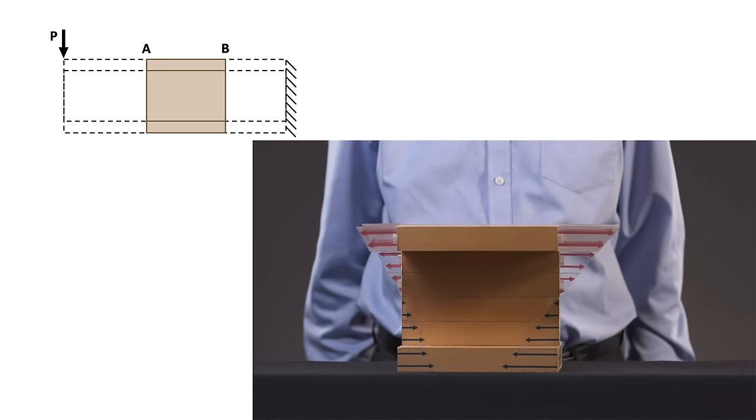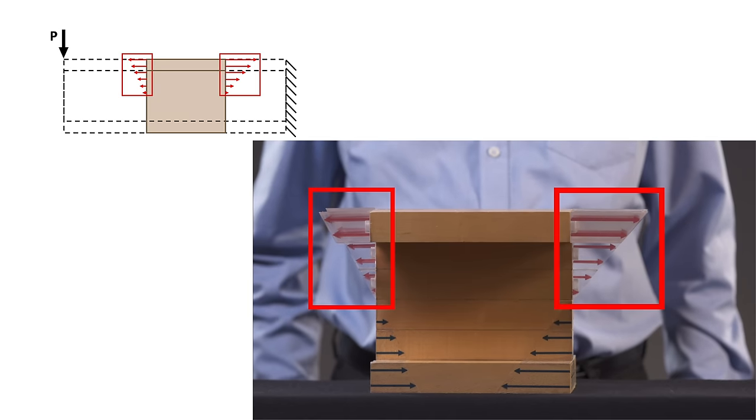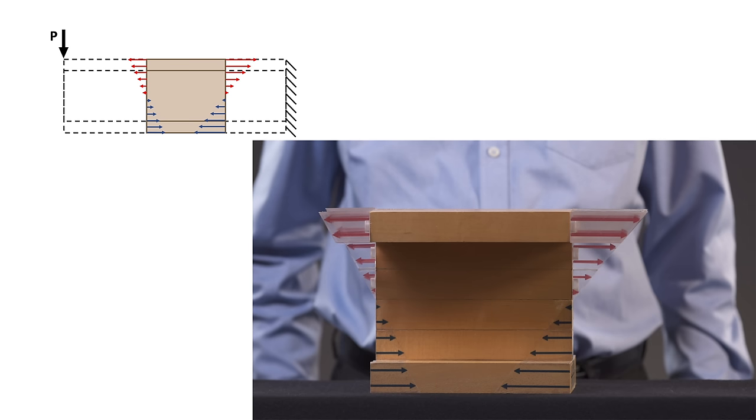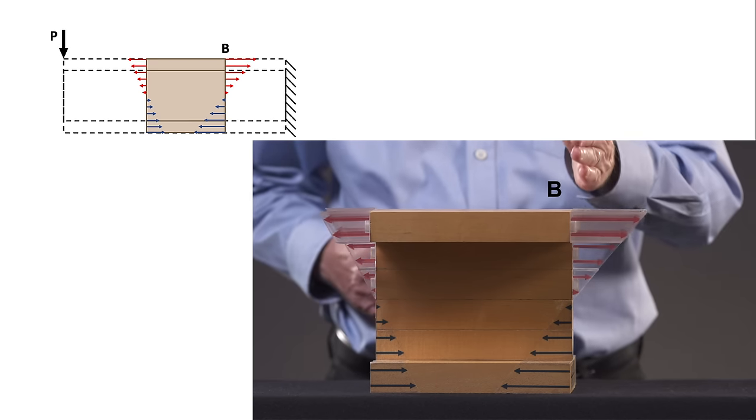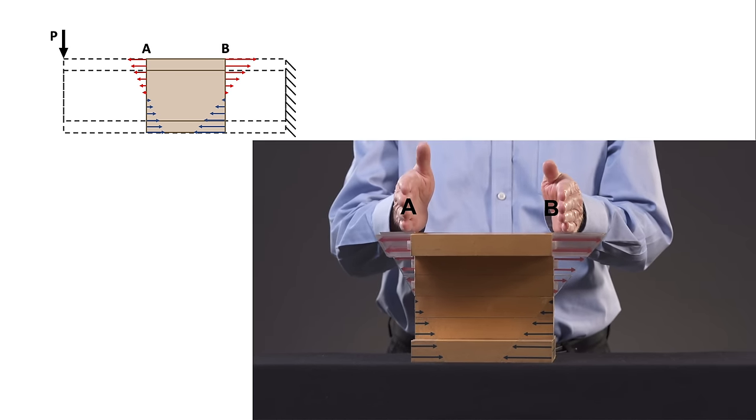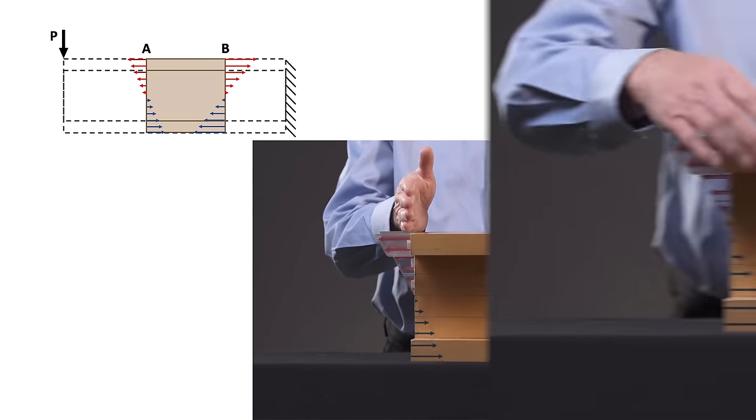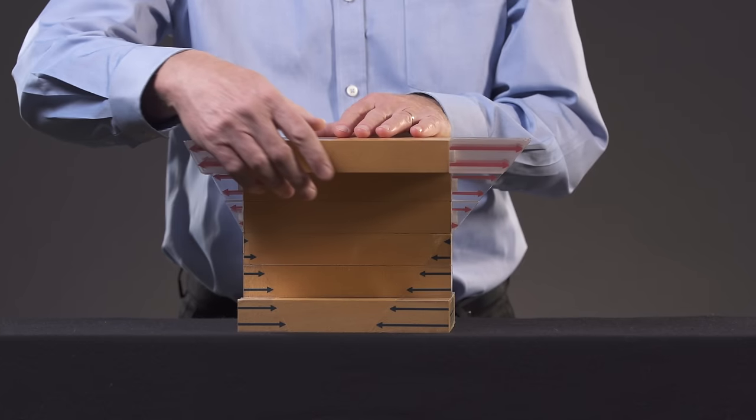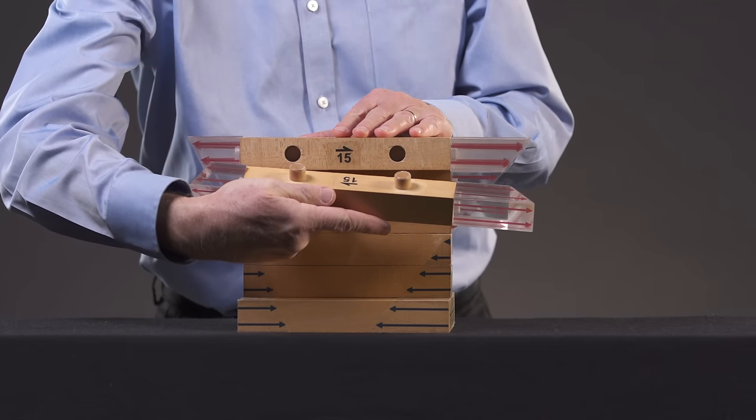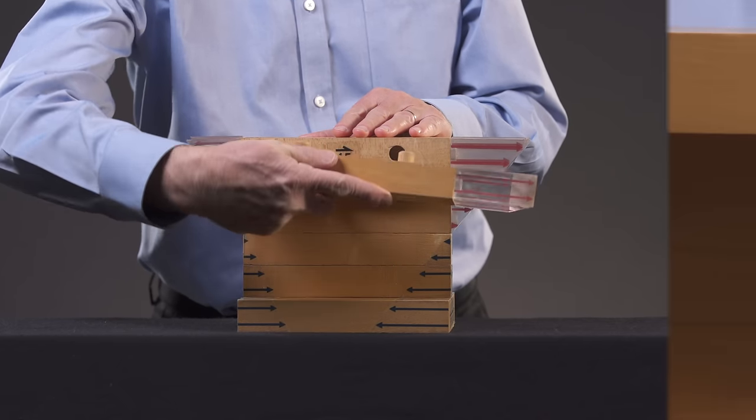We represent the tensile bending stresses that these moments would produce using red arrows overlaid on plexiglass blocks and the compressive ones with blue arrows overlaid on the beam. As you can see, the bending stresses at B are also larger than those at A. As we will discover shortly, differences in bending stresses from one section to another along the length of a beam are the reason that shear stresses arise.